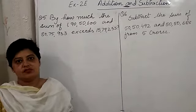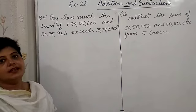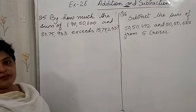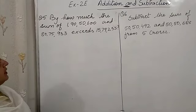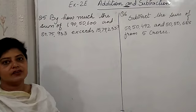Now question 5 of exercise 2E. By how much the sum of 1,90,50,600 and 80,75,933 exceeds 15,79,233?